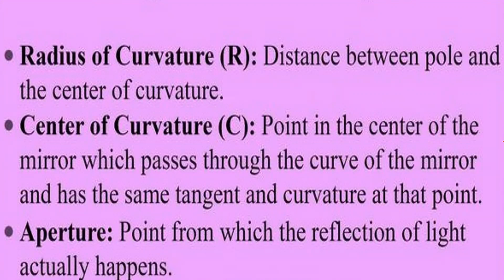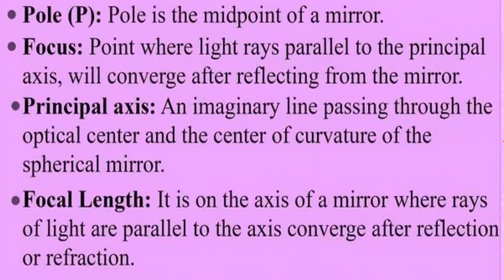Aperture is the point from which the reflection of light actually happens. The pole is the midpoint of the mirror. Focus is the point where light rays parallel to the principal axis converge after reflection from the mirror. The principal axis is an imaginary line passing through the optical center and the center of curvature of the spherical mirror. Focal length is the distance from the pole to the focus point.